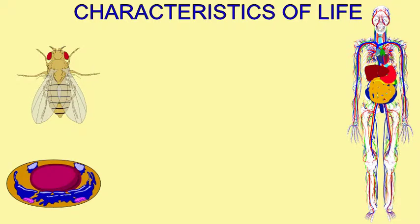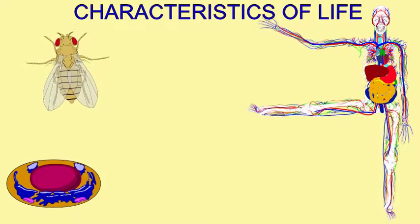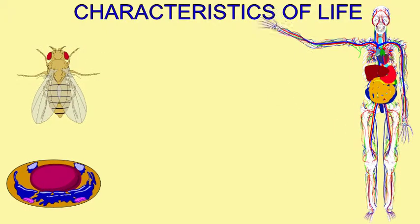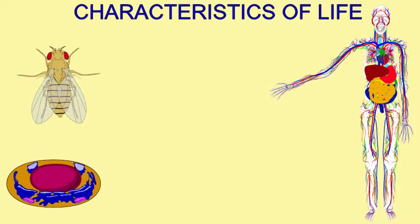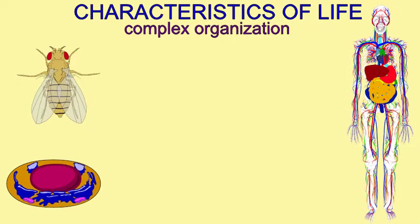There are certain features which all living things share, from complex humans and flies to the simplest cells. For example, all living things share a complex organization.